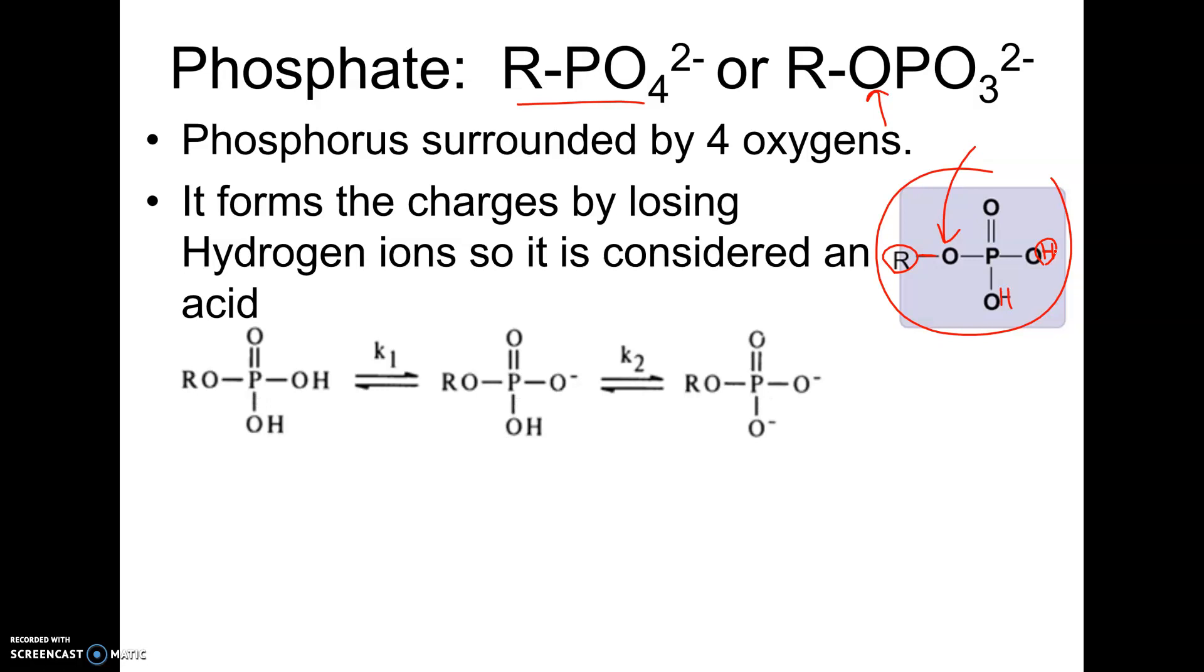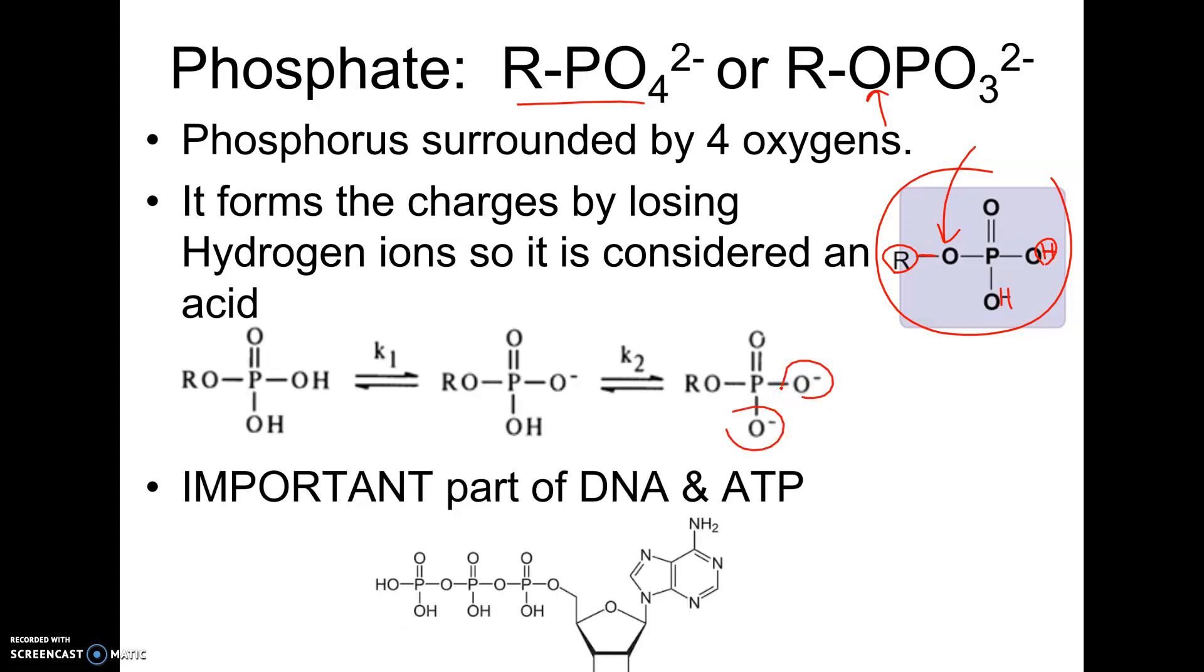And where it's important, and this is just to show you it forming an acid. You don't have to know this. I just wanted to show you why it's considered an acid. And it's very important, specifically in DNA and in ATP, adenosine triphosphate. You may remember that as our energy source. And here's adenosine triphosphate, tri for three. It's got three phosphates on it.